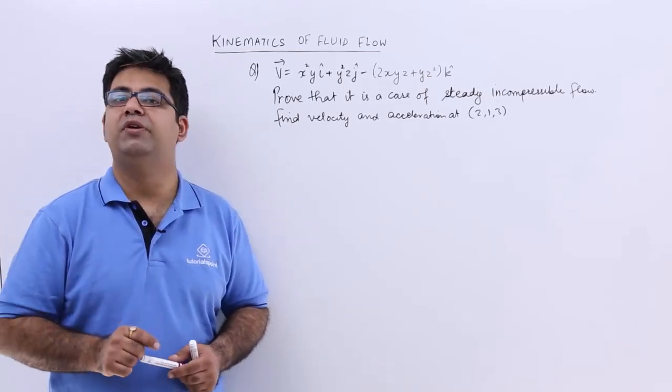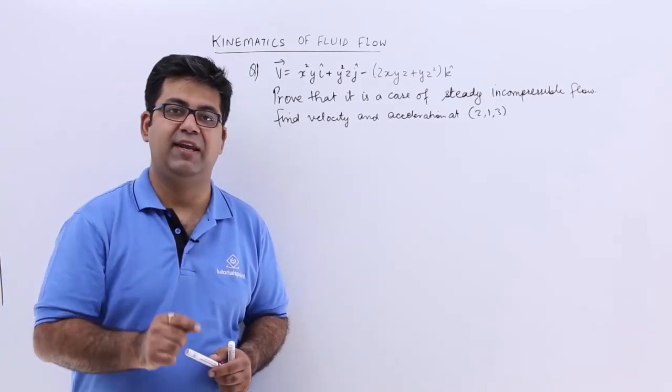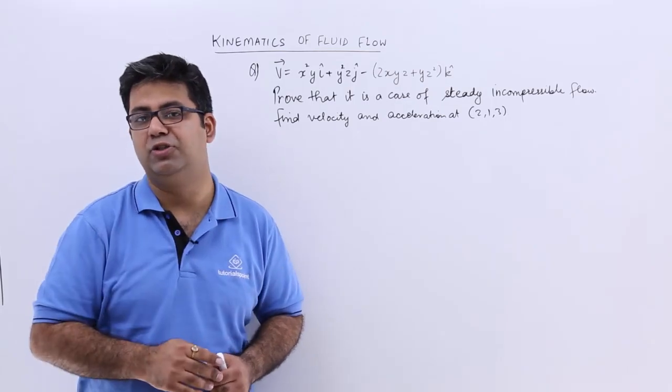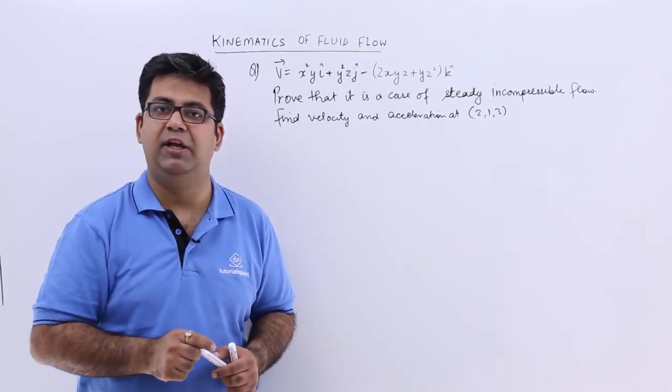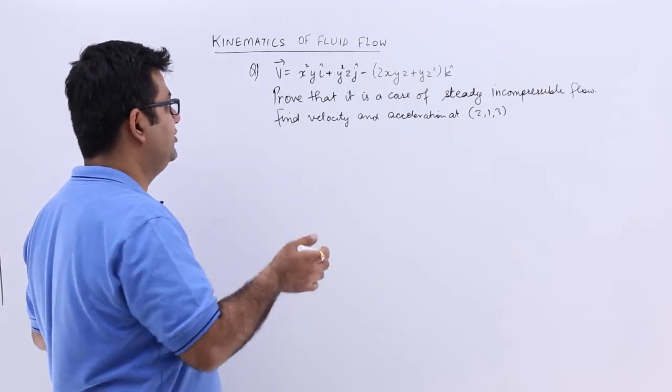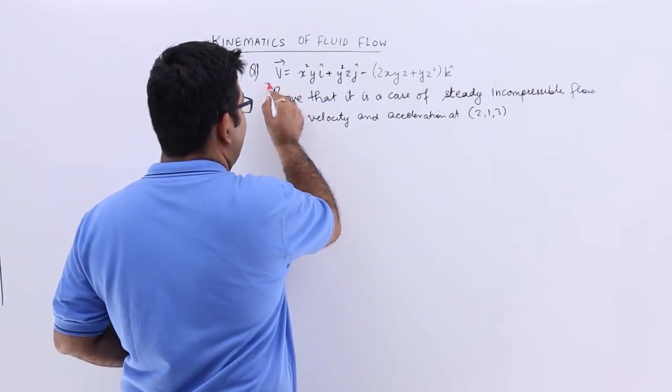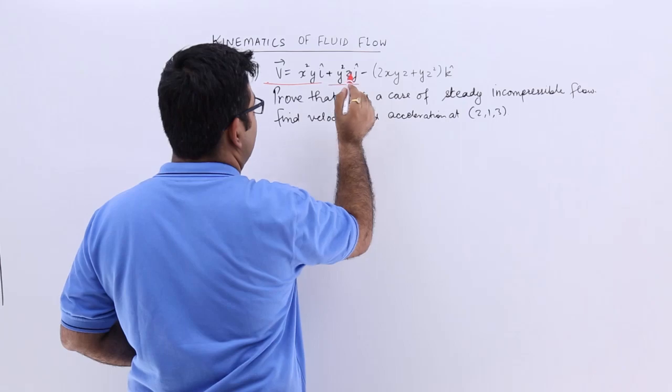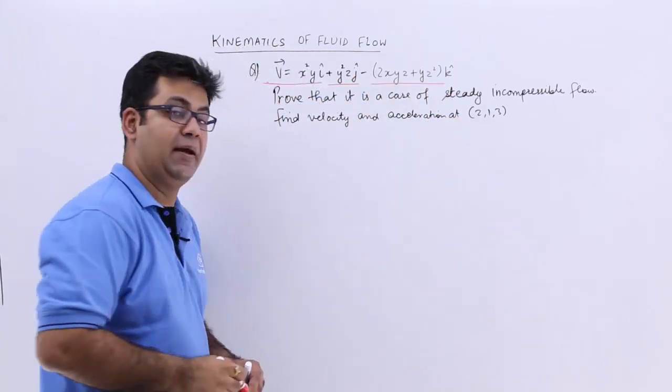Now let's look at one more question on the concept of velocity and acceleration before I move on to the next topic of the velocity potential function. So the question says we have a velocity vector which is x²y i cap plus y²z j cap minus all this k cap.